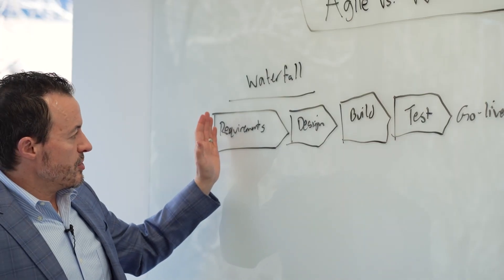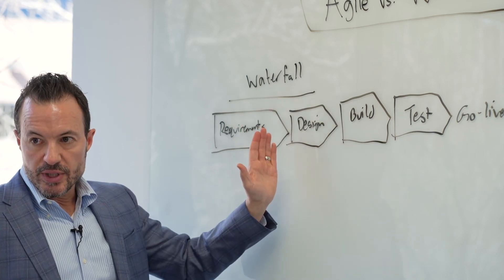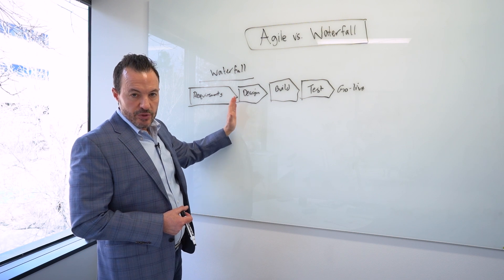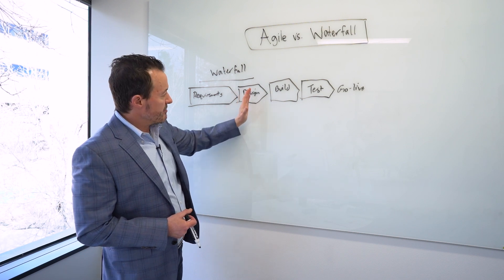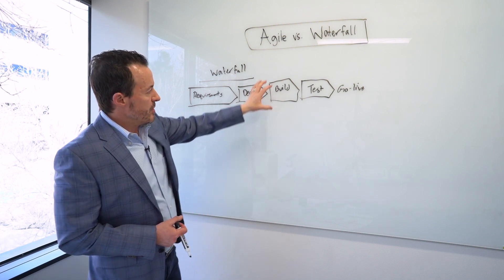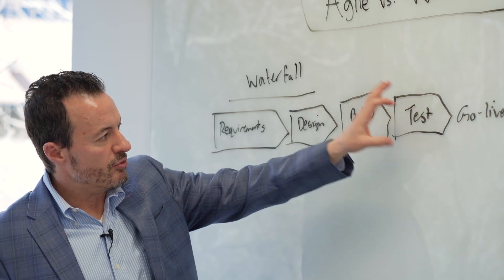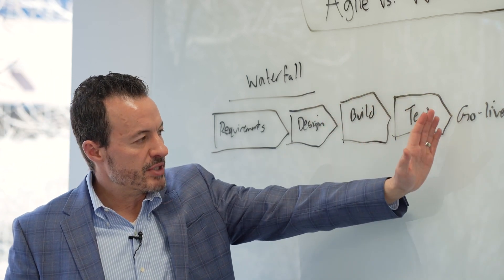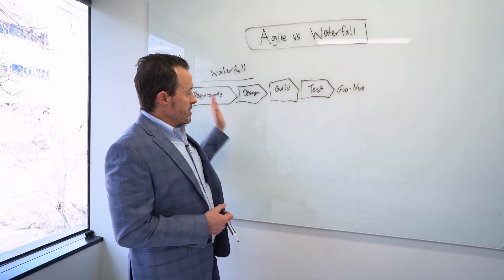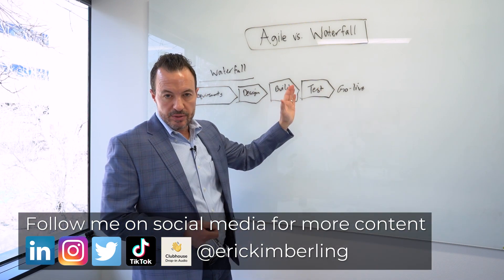What ultimately happens in waterfall is you finish your requirements definition, lock down requirements gathering, get sign-off and approvals through a stage gate, then move on to design, sign off, go through the stage gate, then build, stage gate, then test — making sure you've done user acceptance testing and all that — and then go live. If there are disruptions along the way, it pushes everything out because everything is sequential. That was intentional — it was meant to create software that is standardized and well thought out.